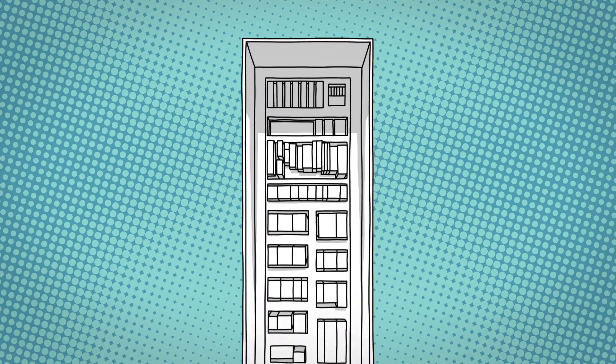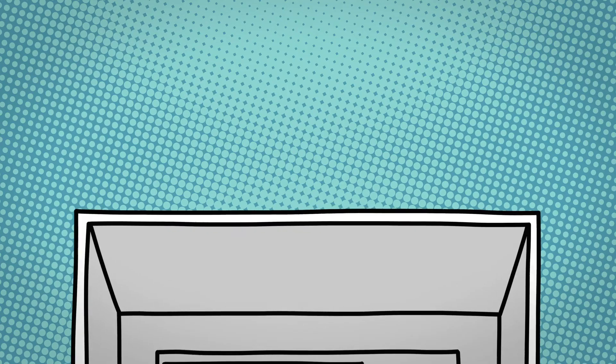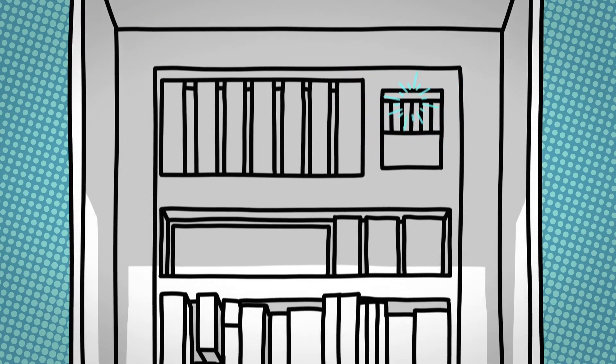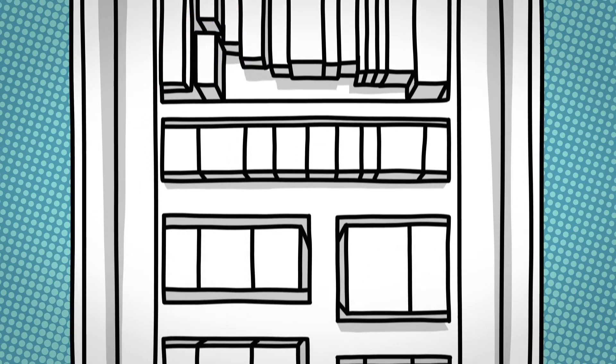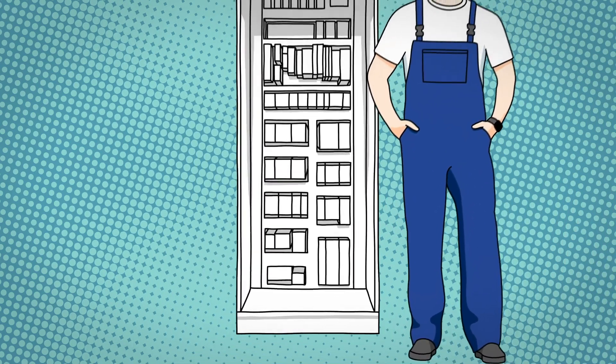Modern control cabinets contain hundreds of different devices and components along with the corresponding wiring. In order to get a good overview, clear, easily visible, and permanent identification is essential. It increases safety and simplifies workflows.